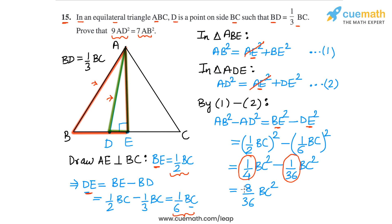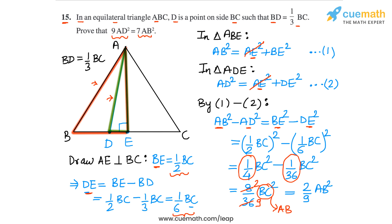Reducing eight thirty-sixths to lowest form gives two-ninths. Also, since triangle ABC is equilateral, BC equals AB. We want a relationship between AB and AD, so we replace BC with AB. This gives us AB squared minus AD squared equals two-ninths of AB squared.